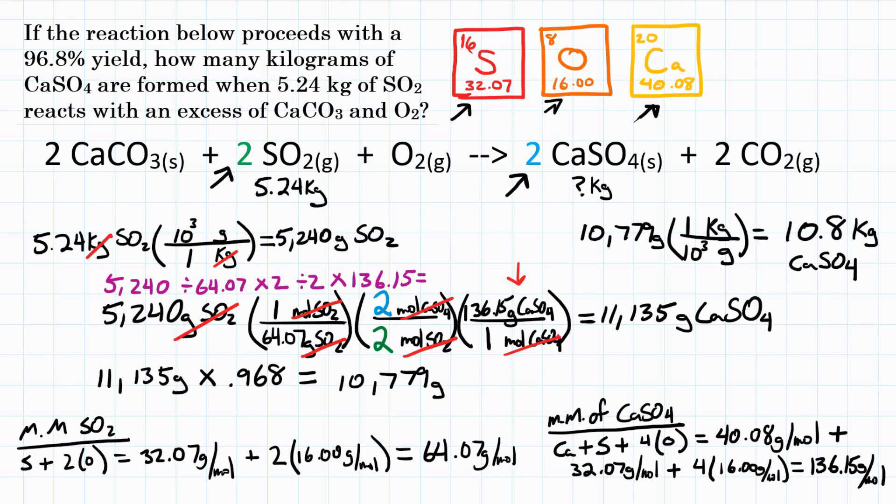So final answer. If the reaction below proceeds with a 96.8% yield, how much CaSO4 would be formed with 5.24 kilograms of SO2? That would be right around 10.8 kilograms.